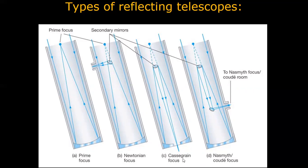In the Cassegrain focus, our eye is positioned down below, so we are basically looking toward the star. Then there is the coudé focus — 'coudé' is a French word meaning 'cut' or 'bent.' There is a primary mirror at the bottom that creates the primary focus point, then a secondary mirror bends the light further, and a third mirror turns the light so we can keep the eye closer to the primary mirror down below. In the Newtonian focus we keep the eye near the star side, but in the coudé focus we keep the eye closer to the primary mirror.